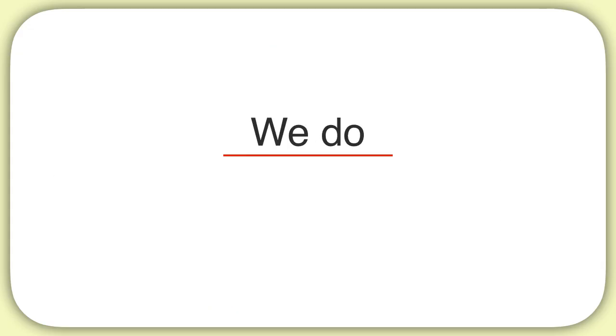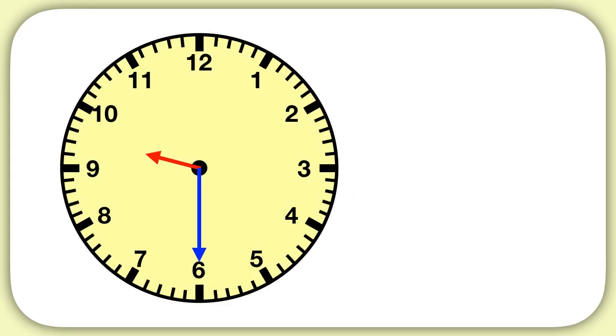Now it's time for us to practice together. Let's figure out what time this clock shows. Well, what should my hour be? My hour hand points here, between the 9 and the 10, so we write that we have 9 hours. For minutes, how many minutes do I have? Remember when the minute hand points at the 6, it represents 30 minutes. So the time is 9:30.